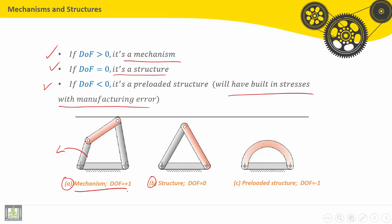Second example is a structure with degree of freedom equals zero. No mobility here. Third example is a preloaded structure. Degree of freedom is negative, minus 1.